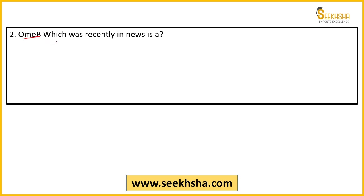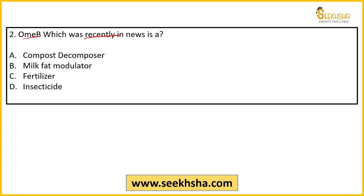Second question — all questions are from the ICAR magazine. OMB, which was recently in the news, is: Option A — a compost decomposer used to quickly decompose compost; Option B — a milk fat modulator; Option C — a fertilizer; Option D — an insecticide; Option E — none of the above. If you have not read about this specific product, it is difficult to answer regardless of your agriculture background.